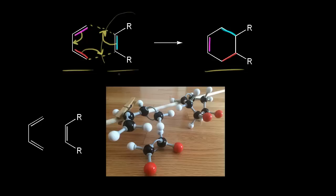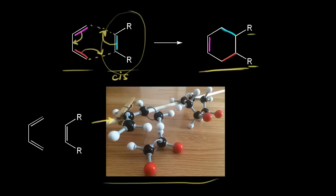Now let's think about the stereochemistry of the dienophile. Here is our dienophile with two R groups cis to each other — on the same side. Looking at the picture of the diene and dienophile: the diene is one plane up top, and the dienophile is another plane below. The two R groups are shown in red. The planes approach each other, and a bond forms between this carbon and this one, and between this carbon and this one.